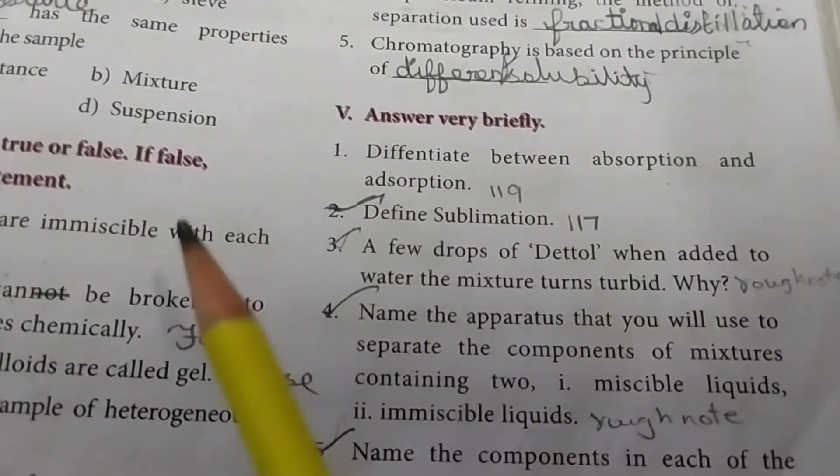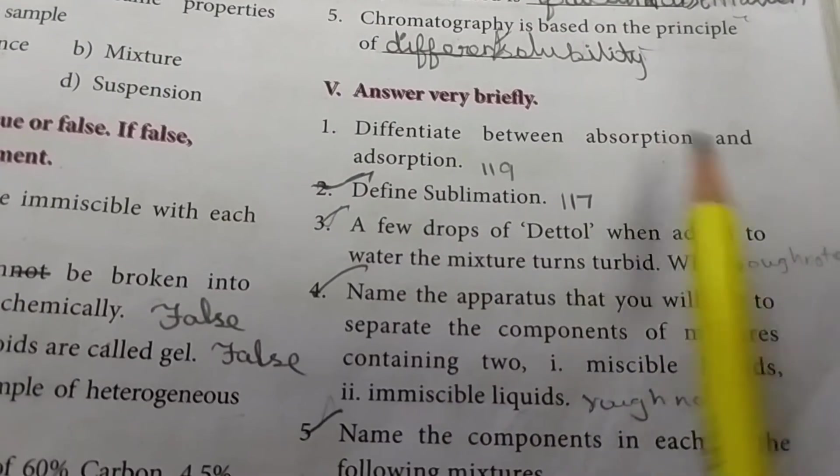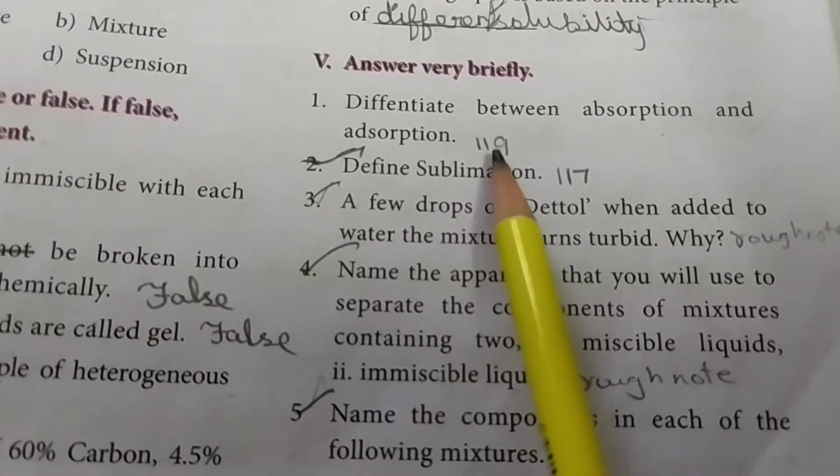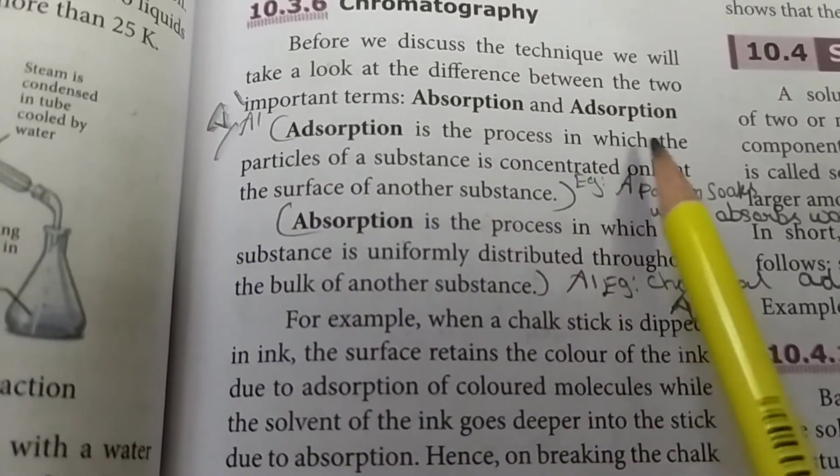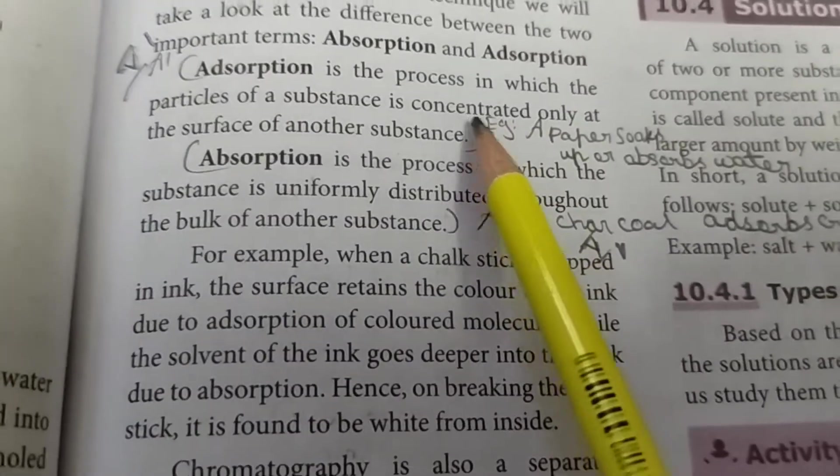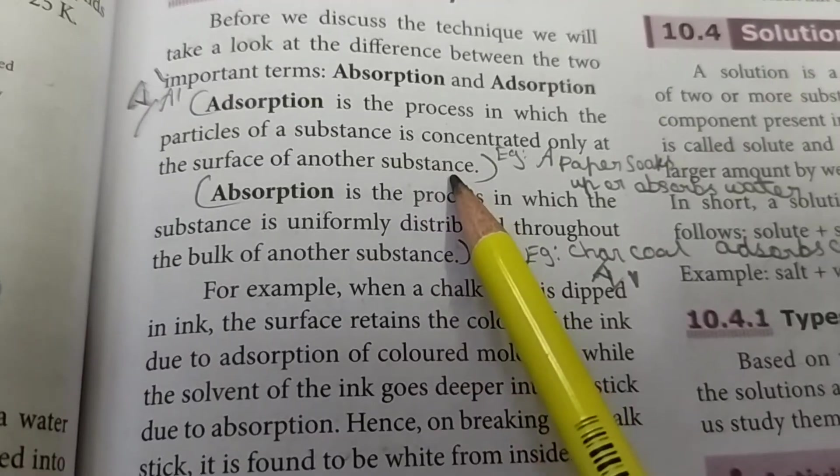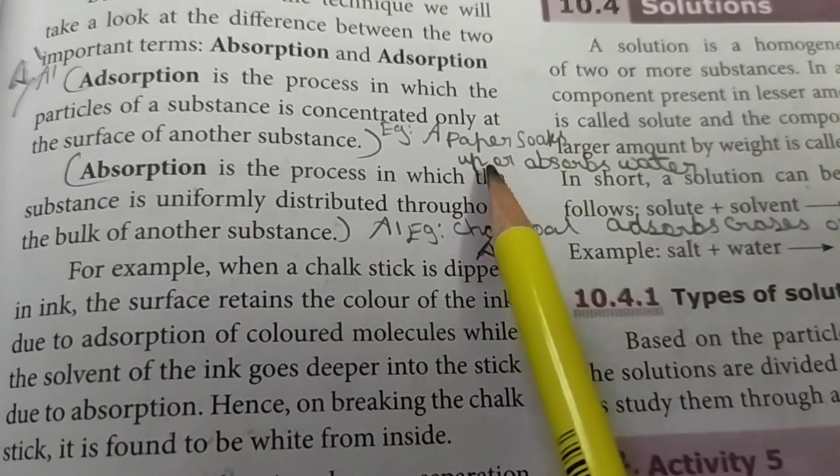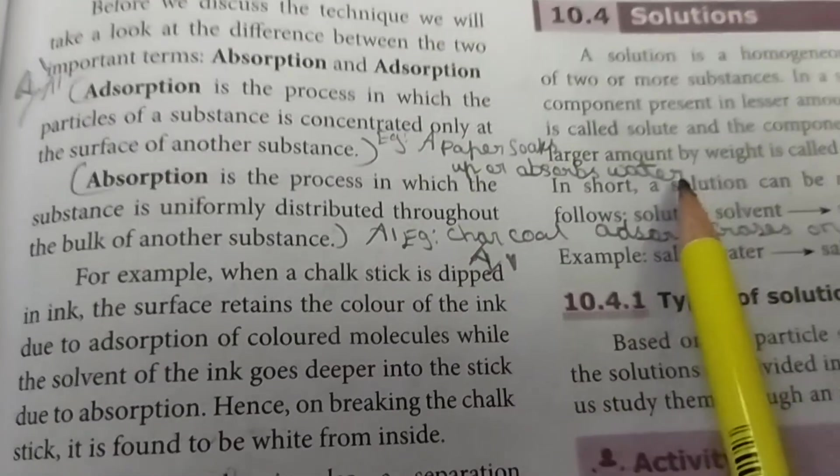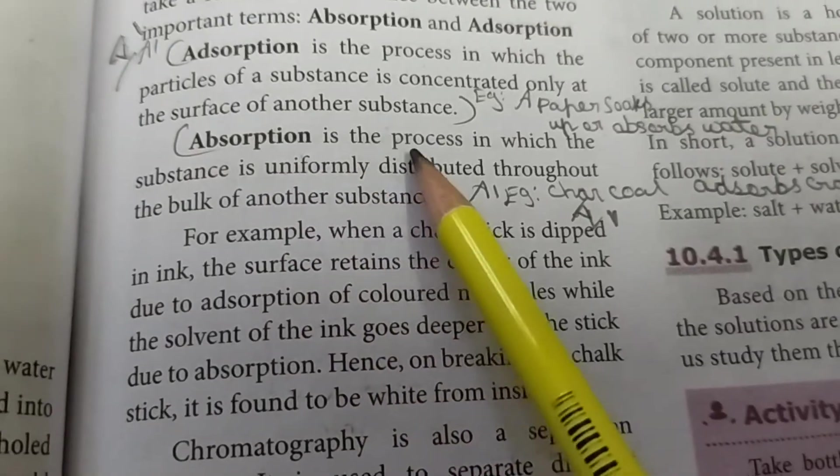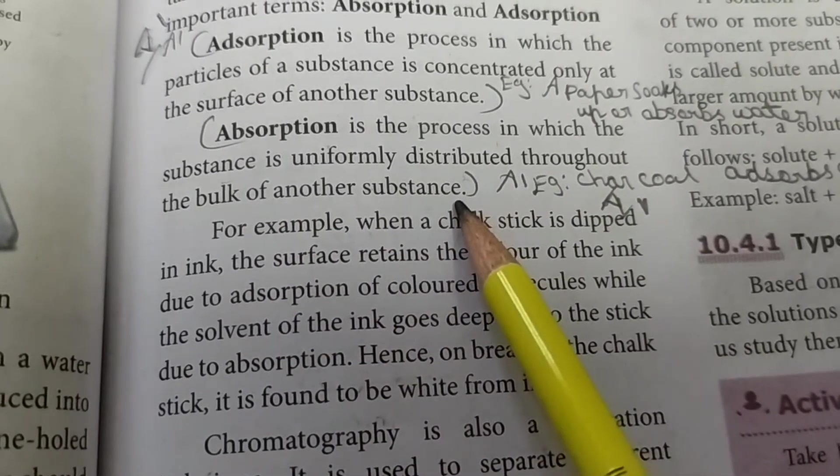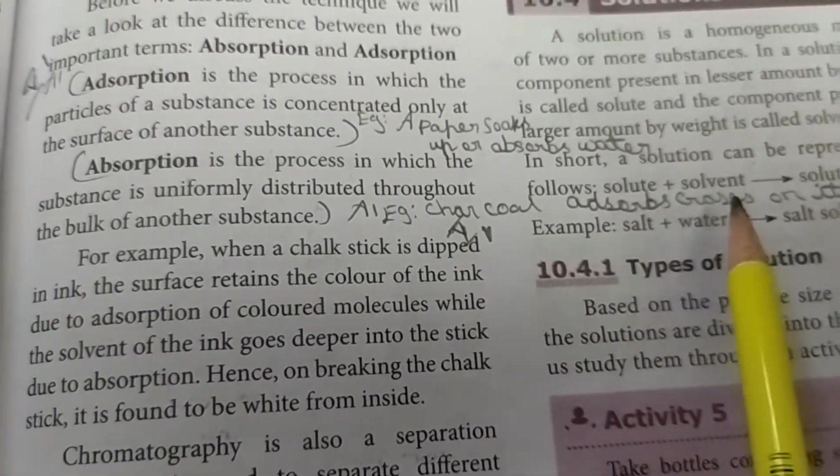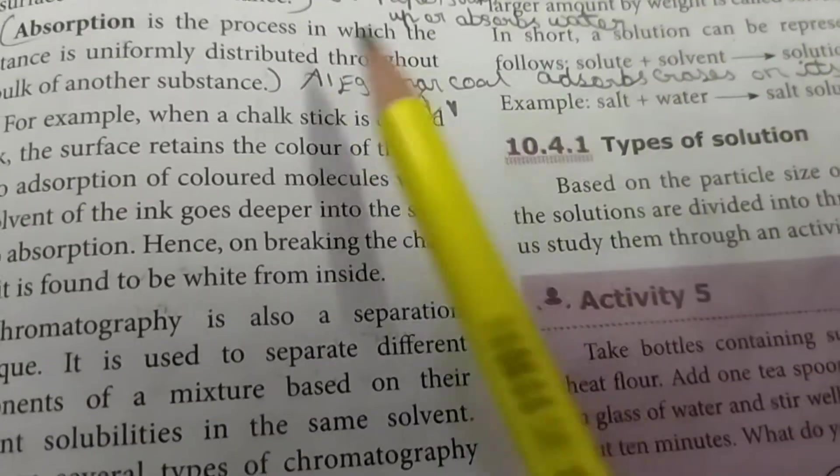Fifth: Answer very briefly. First question: Differentiate between absorption and adsorption. Take page number 119. Adsorption is the process in which the particles of a substance are concentrated only at the surface of another substance. Absorption is the process in which the substance is uniformly distributed throughout the bulk of another substance. For example, charcoal is adsorption while a sponge that soaks up or absorbs water is absorption.